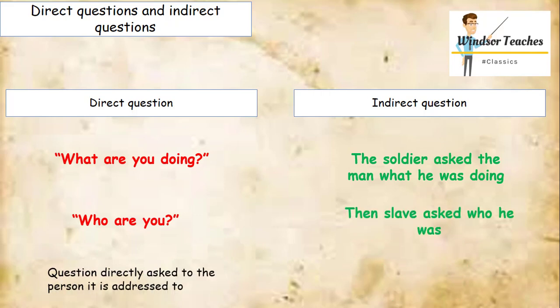So a direct question is a question directly asked to the person to whom it is addressed. However, on the other side of that coin, an indirect question is a question not directly asked to the person it is addressed to, it is a reported question, or is a question that refers to a direct question.